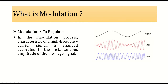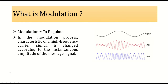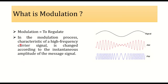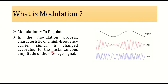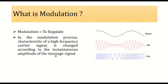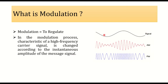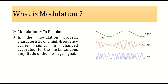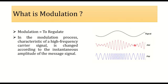In the modulation process, we have one signal that is called the carrier wave, and the characteristics of the carrier wave are going to change with respect to the voltage or instantaneous amplitude of the message signal. So let's say this is your message signal, which is of low frequency, and we are going to change the characteristics of the carrier wave in terms of amplitude.